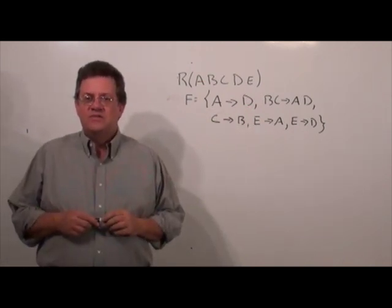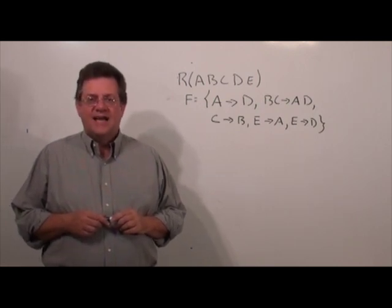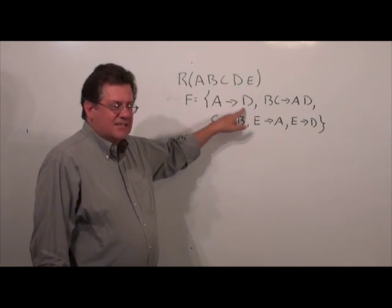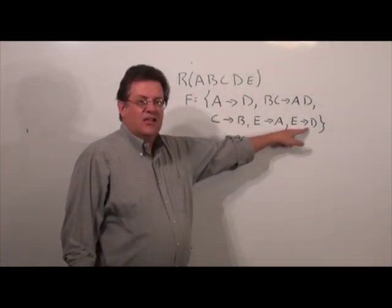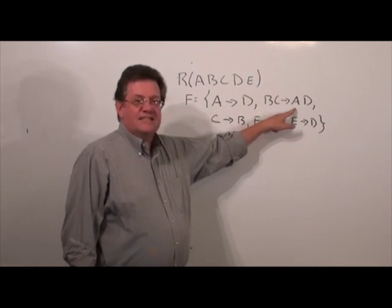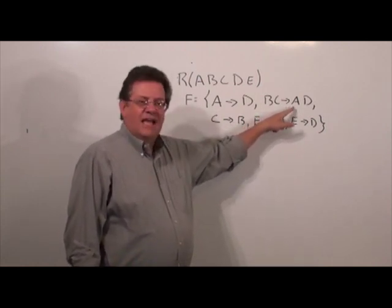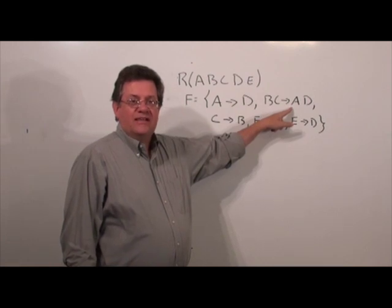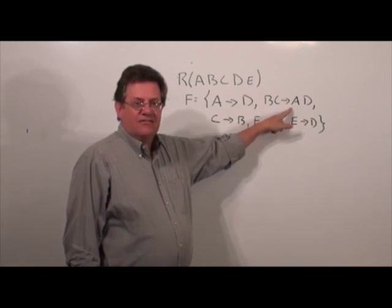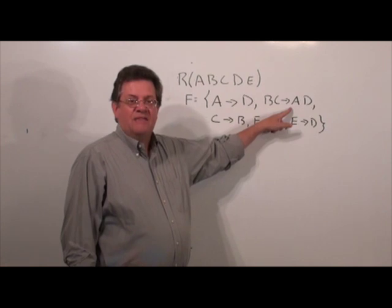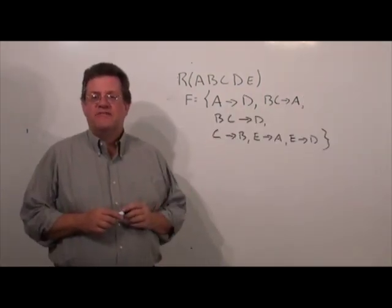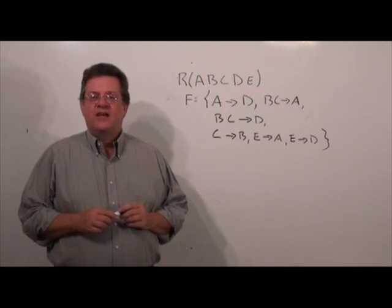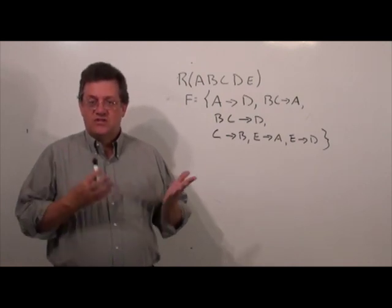The first thing we want to do is make sure that all functional dependencies have singleton right-hand sides. As we look, most have singleton right-hand sides, but BC→AD does not. So by decomposition, we break it down to BC determines A and BC determines D. I rewrote the functional dependencies and made sure that all functional dependencies have singleton right-hand sides, which they do.